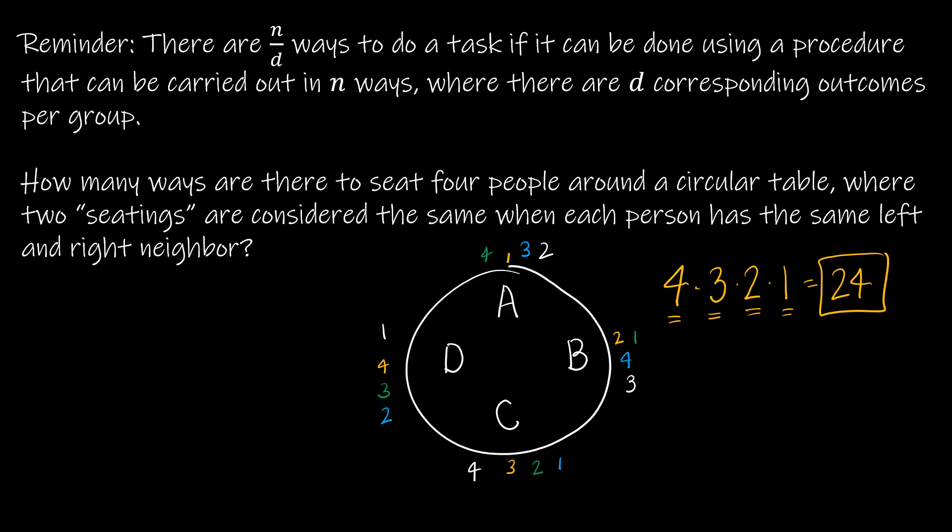So basically what we're saying is we've counted the same seating four times. And so the division rule says, great, you've counted it four times. That's D. So 24 divided by four is your solution, which is, of course, six. So six, there are six different ways that I can seat four people around a circular table.